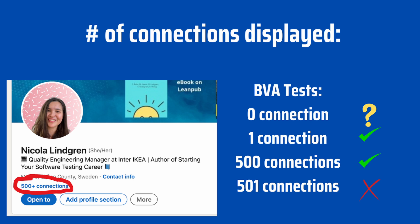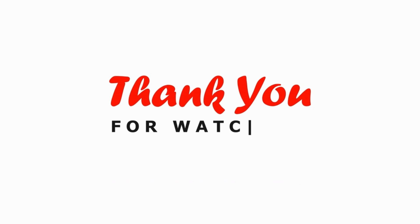We would then test with an account with 501 connections, just above that limit, and we would expect to see '500 plus connections.' Hope that helps. If you have any questions about boundary value analysis, please ask me in the comments. Thanks.